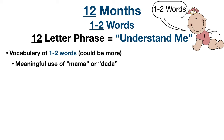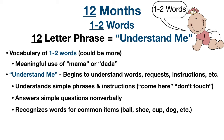You can also think of the 12-month milestone as the understanding phase, remembered using the 12-letter phrase 'understand me.' They begin to understand anywhere from 3 to 50 words, begin to bring meaning to their vocabulary, and understand simple phrases, instructions, requests, and commands such as 'put the toy on the ground,' 'come here,' and 'don't touch.' The child may also start to answer simple questions non-verbally by nodding or shaking their head, and they recognize names for common items like ball, shoe, cup, juice, and dog.